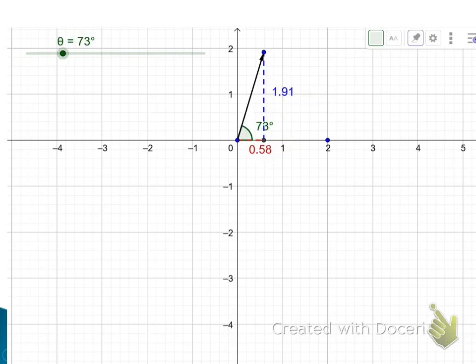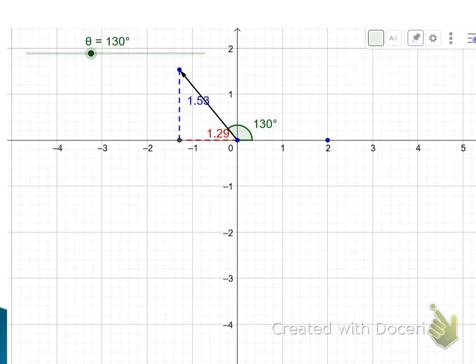Now one weakness of this simulation, it's not showing negative numbers, and I wish it would. Right now, the red number should say negative 1.29. We'll get more into positives and negatives in class.